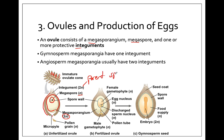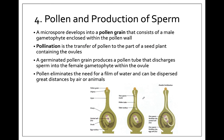The ovule also contains one or more protective integuments — a covering from the parent sporophyte, which is diploid. Gymnosperms typically have one integument; angiosperms typically have two integuments, and that's one characteristic that distinguishes these two groups. Once fertilized, the megaspore becomes the egg, which is fertilized by the male gametophyte and eventually becomes the embryo, developed inside the parent. This then becomes the seed coat, which can be dispersed.